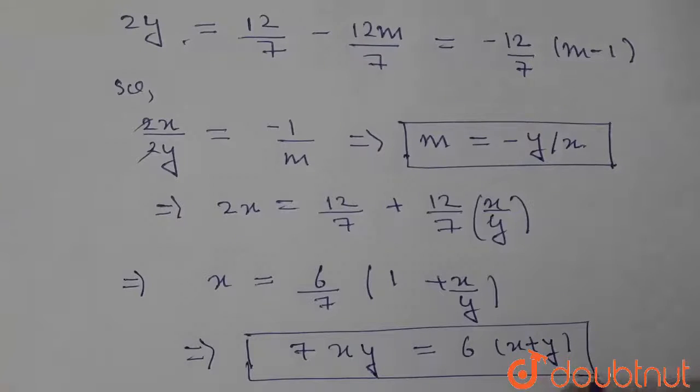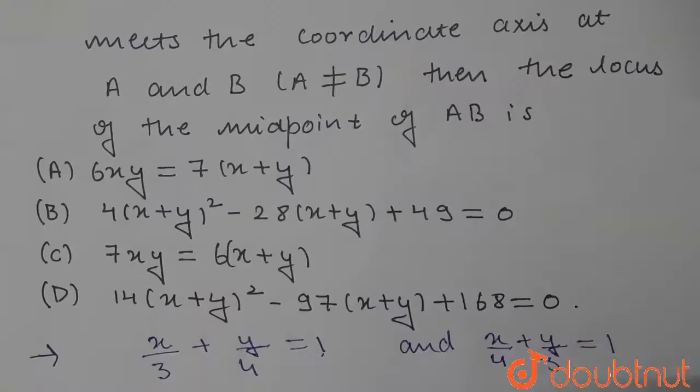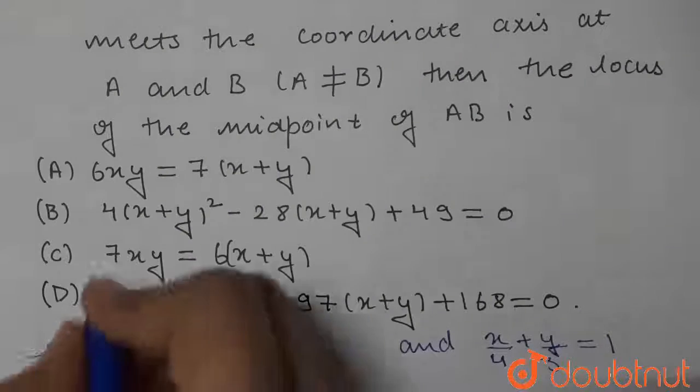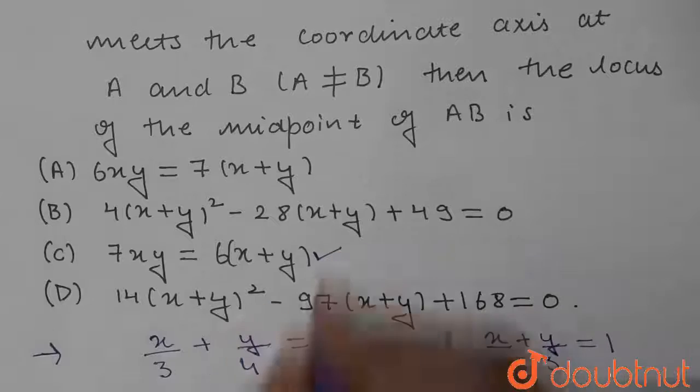Looking at the options, option C — 7xy = 6(x + y) — is the correct answer. Thank you.